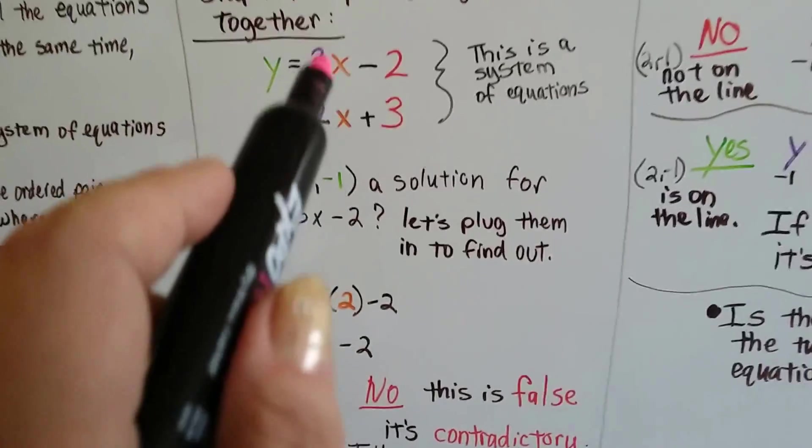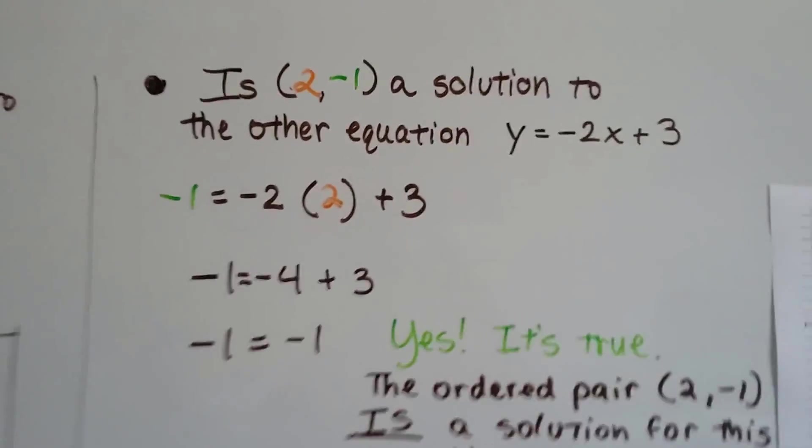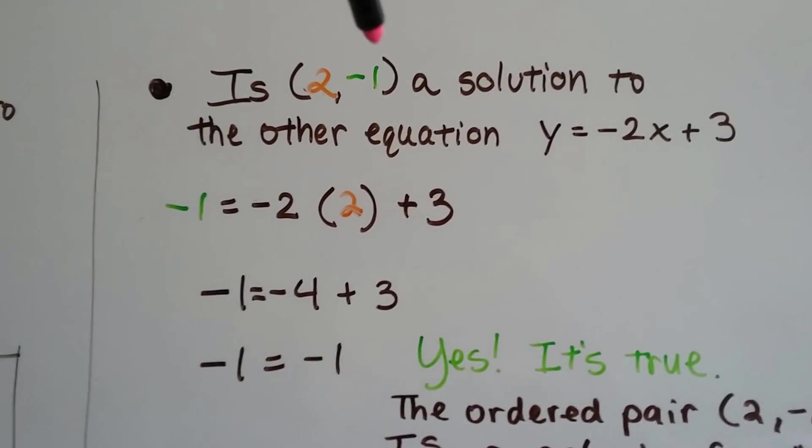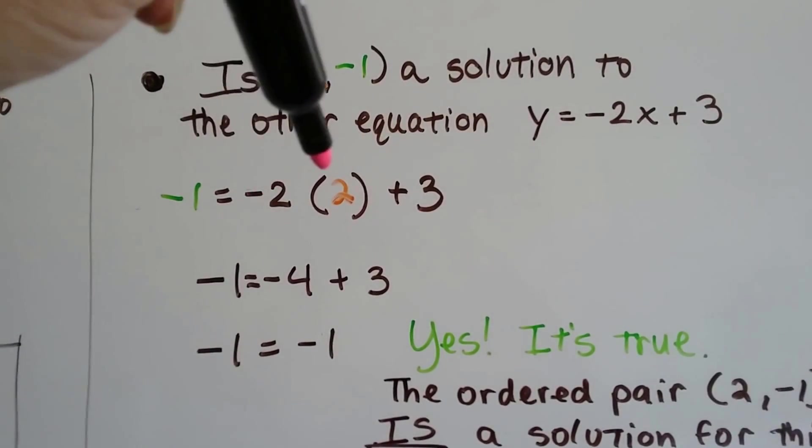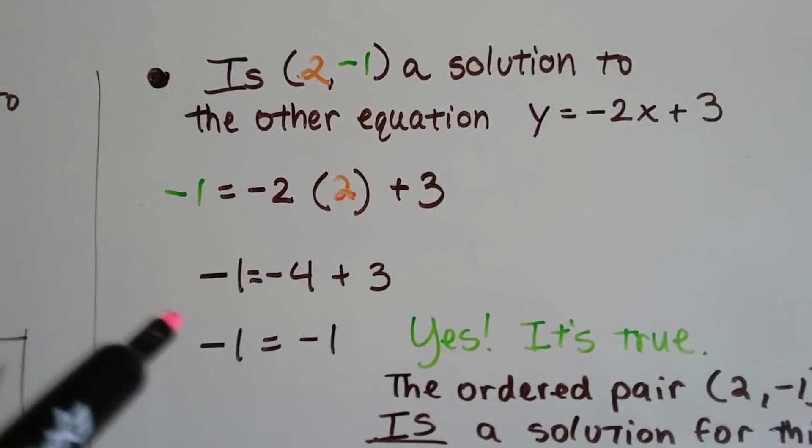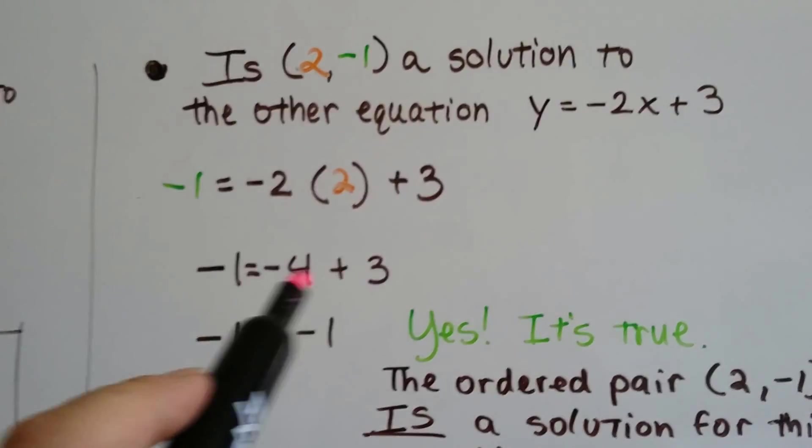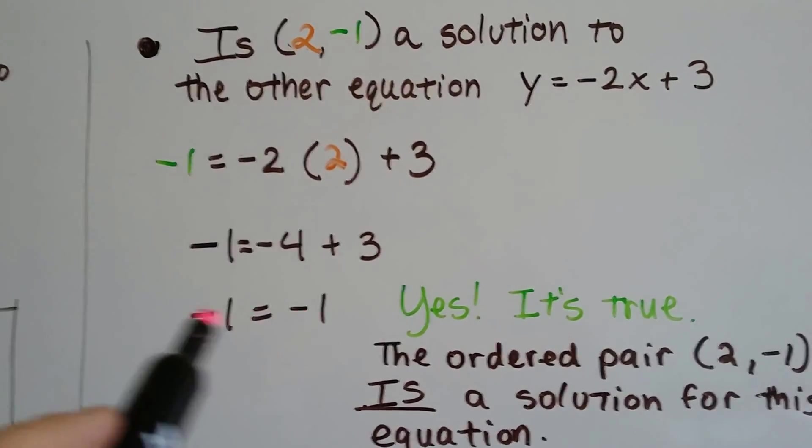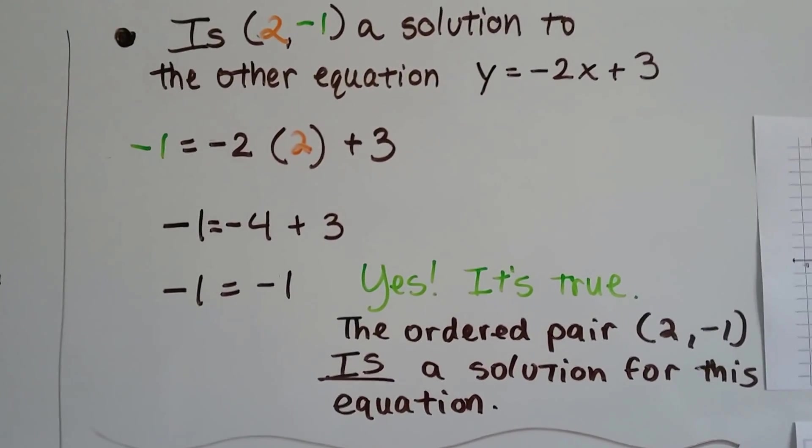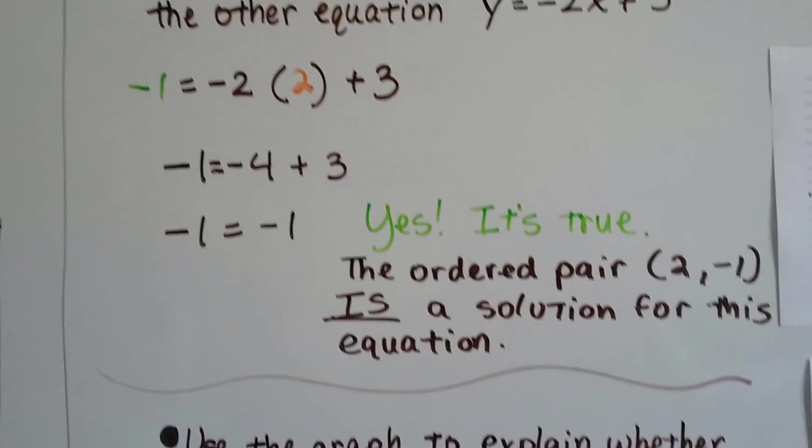So 2 negative 1 is not the solution for this first one. Is it the solution for this next one with the plus 3 as the y-intercept? We're going to plug in the x value and the y value into our equation. So that means it's negative 1 equals negative 2 times 2 plus 3. That means negative 2 times 2 is negative 4. We drop our plus 3 down and we've got negative 1 equals negative 4 plus 3. Negative 4 plus 3 is negative 1. So yeah, negative 1 does equal negative 1. It's true. This ordered pair 2, negative 1 is a solution for this equation.